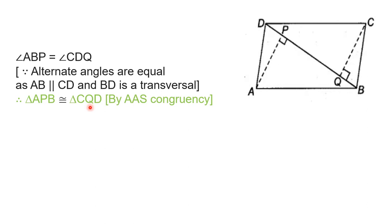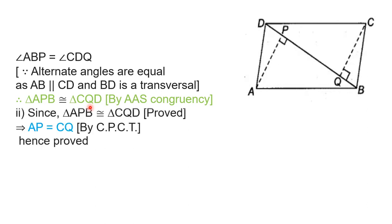For the second part, since triangle APB is congruent to triangle CQD, we get by the corresponding parts of congruent triangles that perpendicular AP is equal to perpendicular CQ. So it is proved.